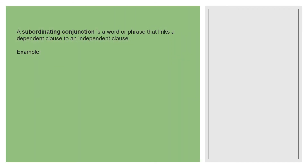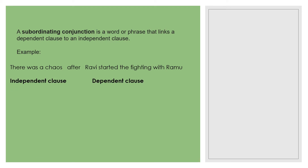The second type of conjunction is subordinating conjunction, which involves the combination of a dependent clause and an independent clause. An independent clause is a complete sentence you can understand on its own. For example: 'There was a chaos' is an independent clause — you can understand it. 'After Ravi started the fighting with Ramu' is a dependent clause — it needs something to complete it. When you combine them, the full meaning becomes clear.